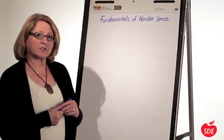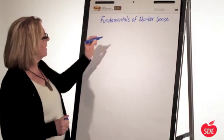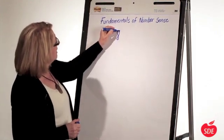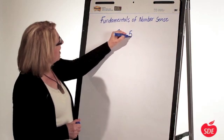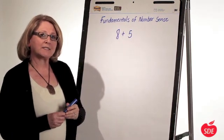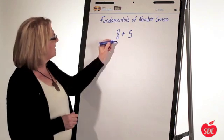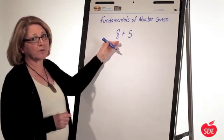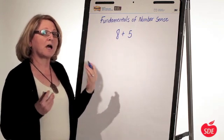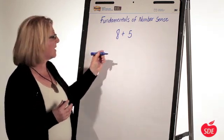Number bonds start very early when we're looking at basic numbers. So let's look at 8 plus 5. I want to make a 10. Well, I need to break one of these numbers apart. It doesn't matter which one. It's not about a procedure, it's about a concept.